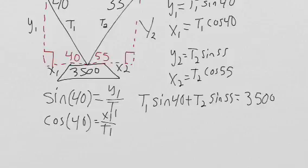I'm going to do this in red so I can put the final in black. We get that T1 cosine 40 equals T2 cosine 55. Those are equal.